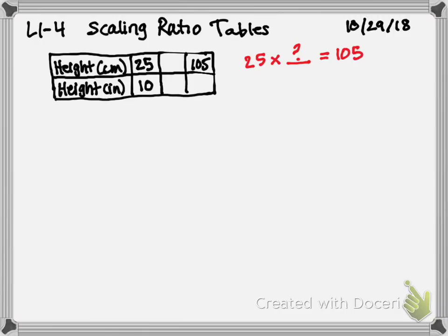I can get to 100 and I can get to 125, so that's not going to work. So I'm going to look at my two numbers — 25 and 10 — and ask myself, is there something those two numbers have in common that I could divide out? Most of you would say we could divide out 5. So if I divide by 5, 25 divided by 5 is 5, and 10 divided by 5 is 2. Now I need to figure out how to get from 5 to 105.